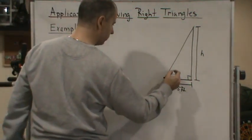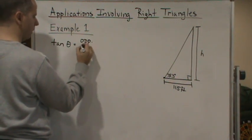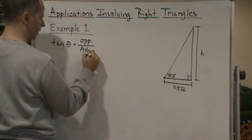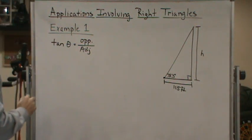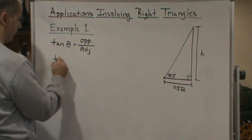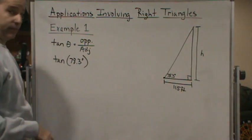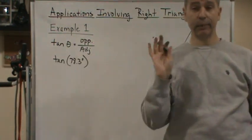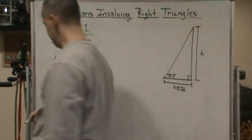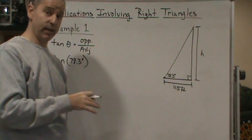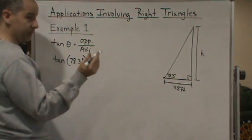So we'll say tangent of theta, right? So this is our theta, is equal to opposite over adjacent. Okay, so now, so this is tangent of 78.3 degrees. Now here's another thing to keep in mind. We're using degrees. So make sure that your calculator is in degree mode when you're doing this problem. Okay, if I had it in radians and I forgot to change it to degrees, this would be wrong.